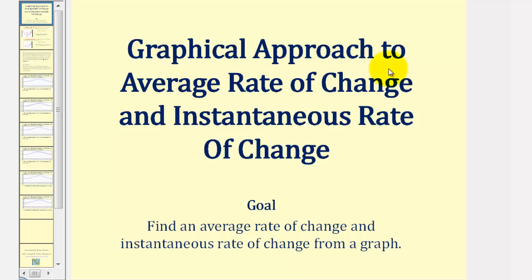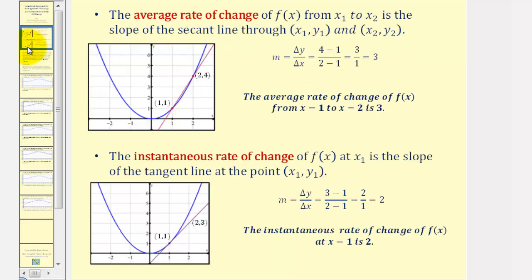Welcome to a lesson on the graphical approach to average rate of change and instantaneous rate of change. The average rate of change of f(x) from x₁ to x₂ is the slope of the secant line through the points (x₁, y₁) and (x₂, y₂).